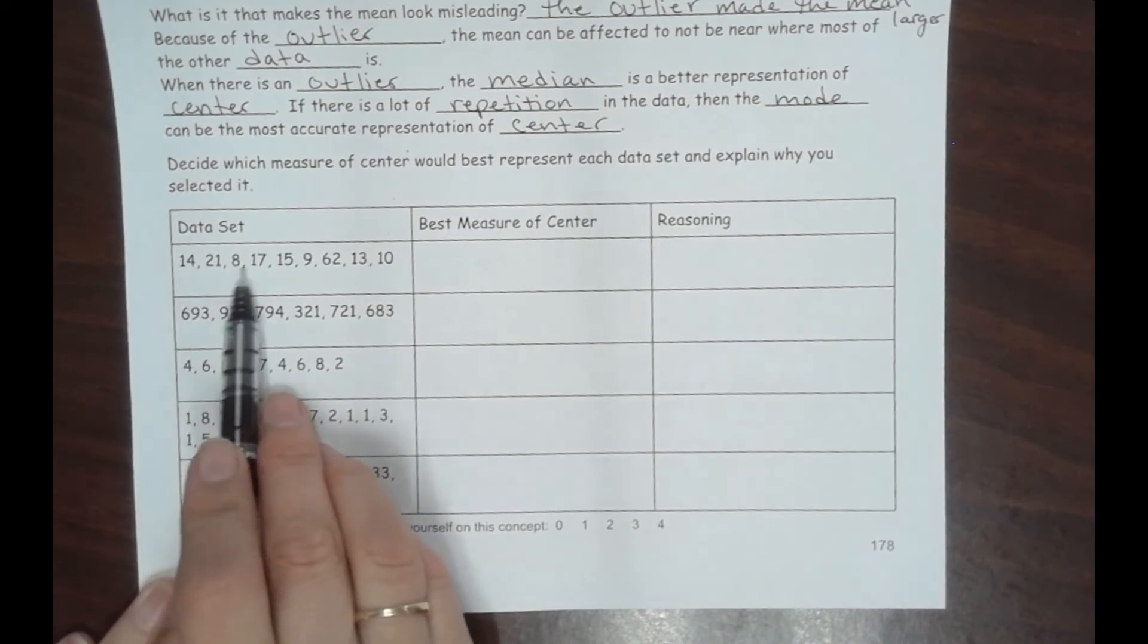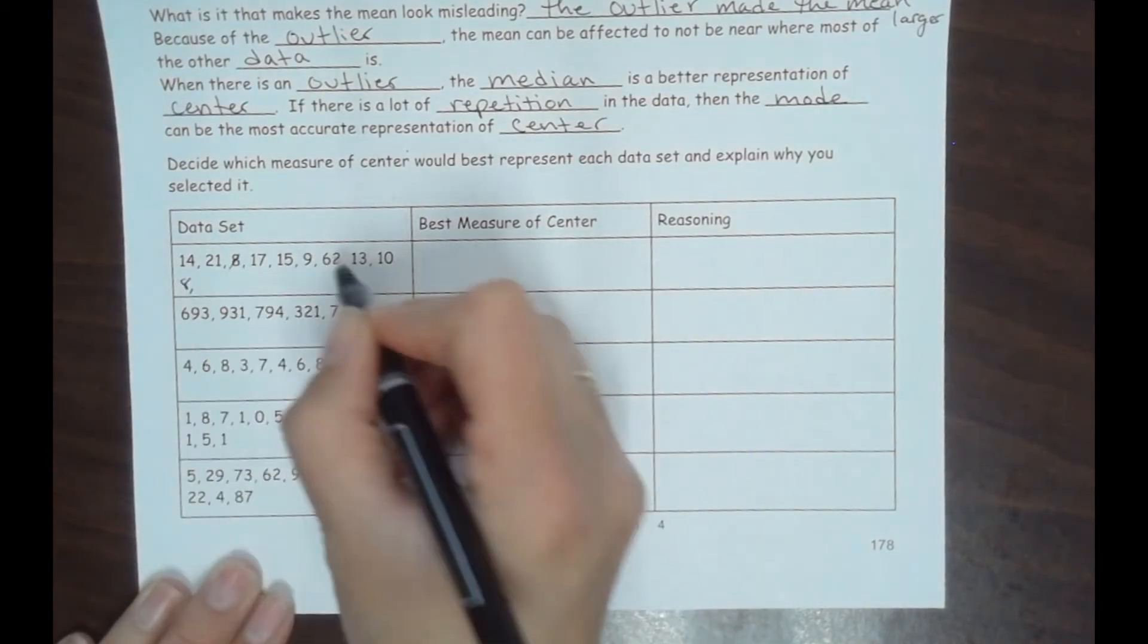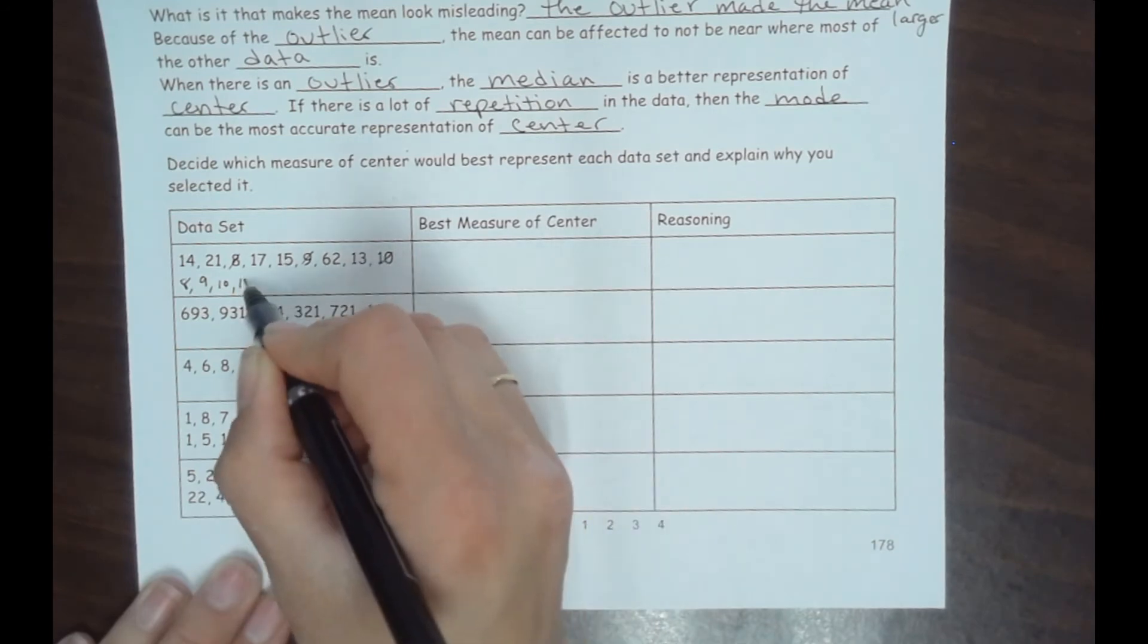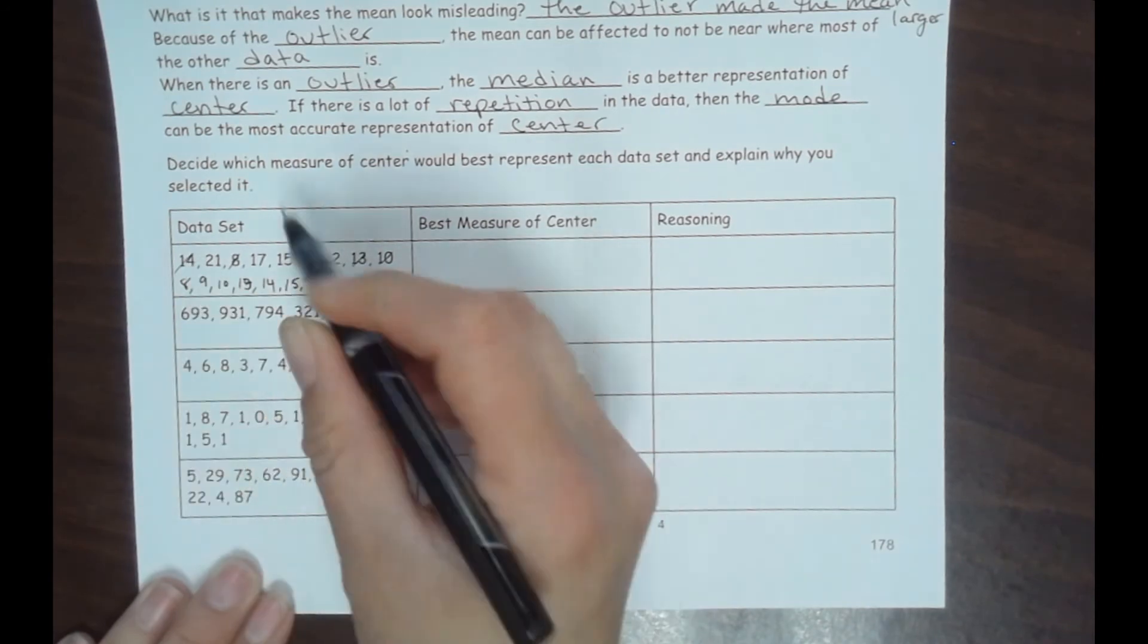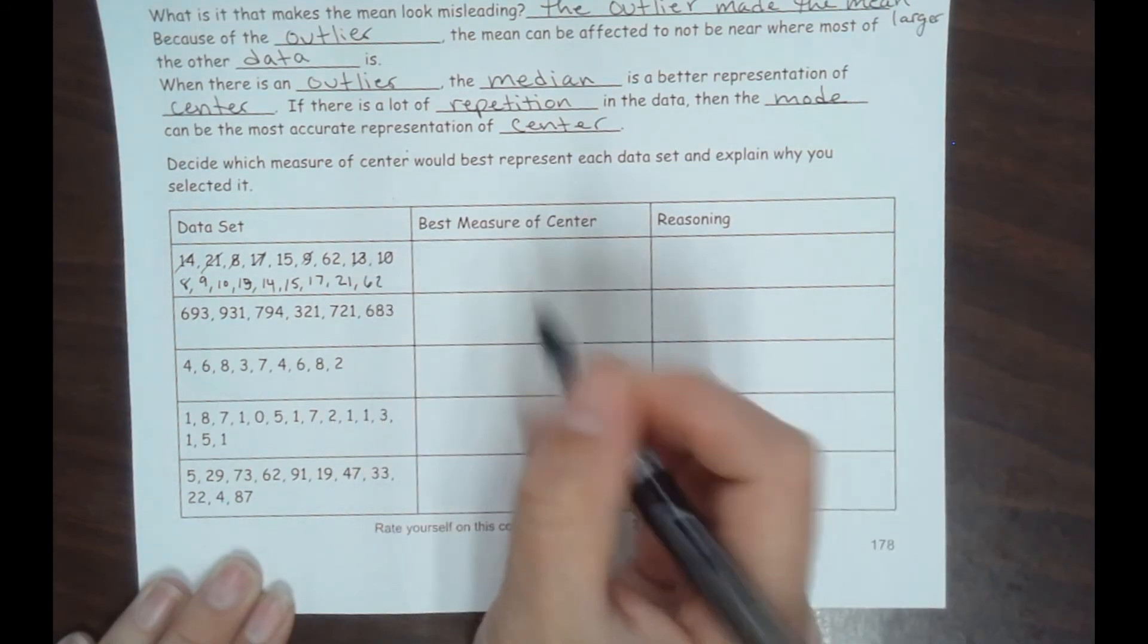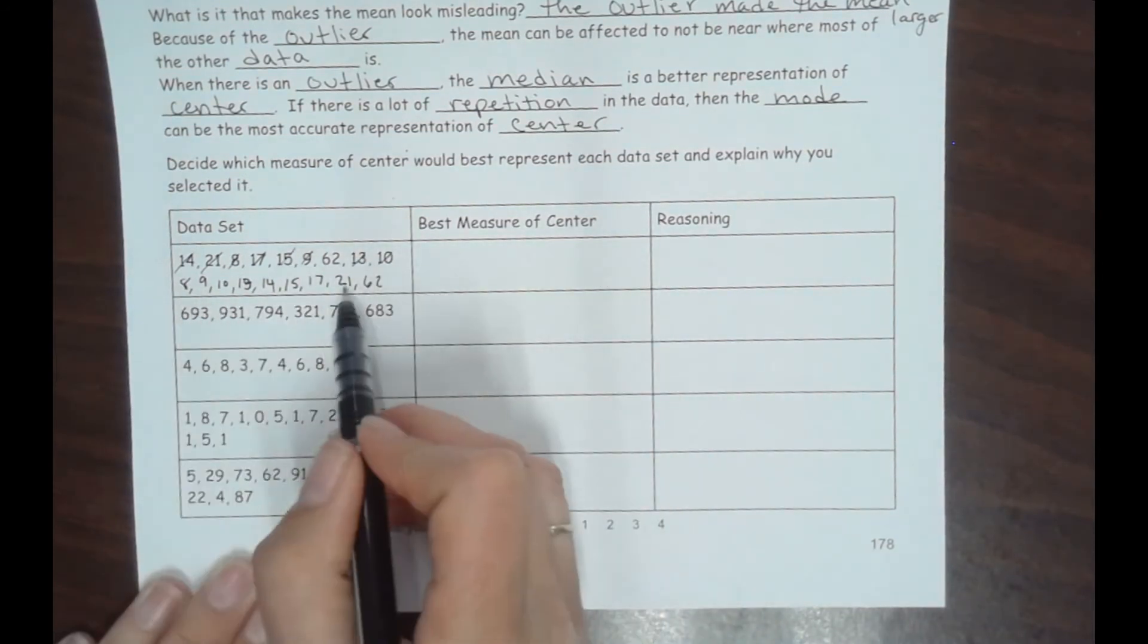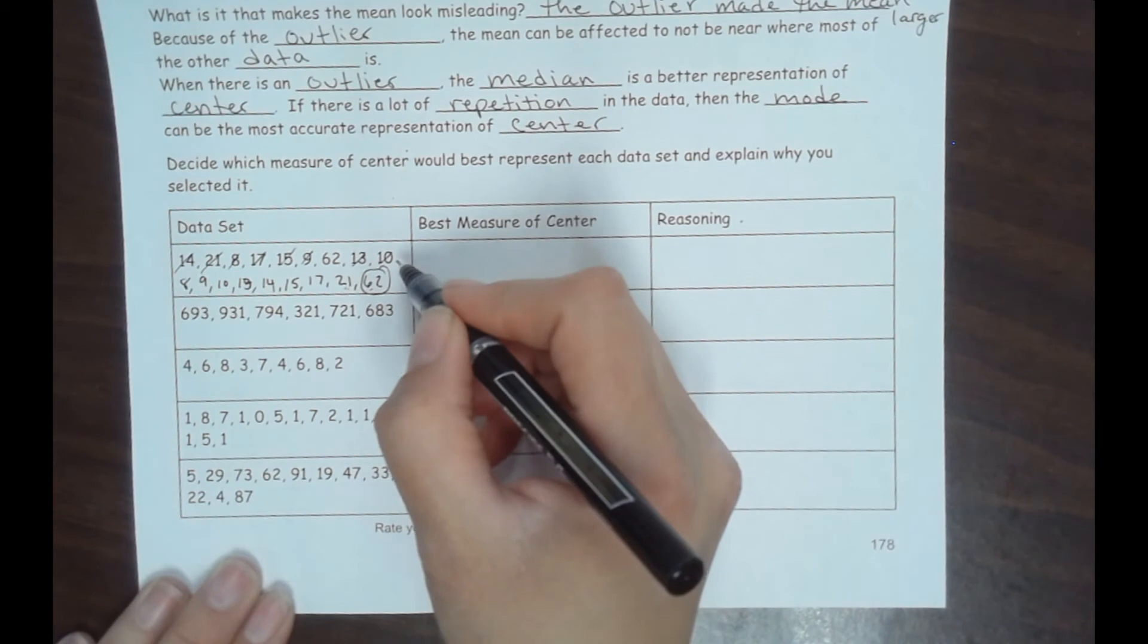So looking at these number sets, let's organize these just so we can see it better. So we have 8, 9, 10, 13, 14, 15, 17, 21, and then 62. So look at all this. When they're organized, it's a lot easier to see if you have an outlier or not. 8 to 21 spans a little over ten numbers, then all of a sudden it jumps to 62. That, my friend, would be an outlier.